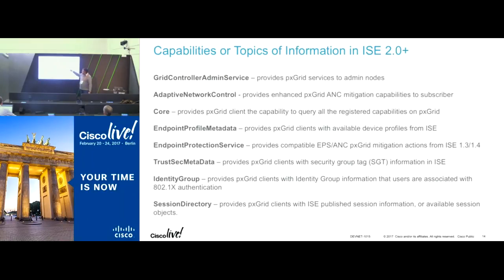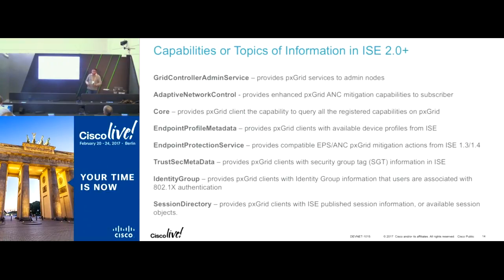Endpoint protection service and adaptive network control is an ability for a third-party system to quarantine or un-quarantine a particular user, or change network privilege dynamically. Assuming a LanCorp StealthWatch has detected an anomalous endpoint exhibiting suspicious behaviors, by subscribing to an ANC or EPS topic, it can tell ISE to do a change of authorization that results in a new network segment being offered to the endpoint. For device profiling, we send it to our endpoint profile metadata topic. Any PXGrid client connecting to the PXGrid network, when it authenticates and authorizes successfully, automatically subscribes to a core topic where it can discover all the topics running in the network and who the publishers are.